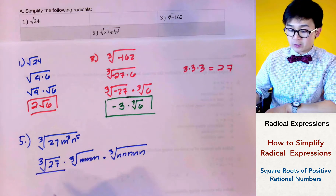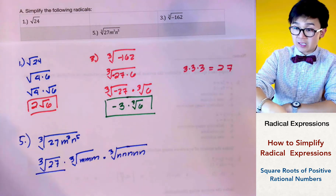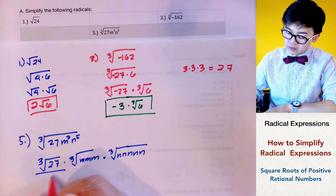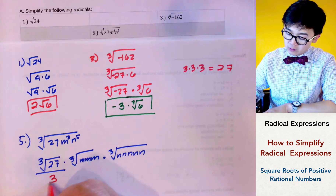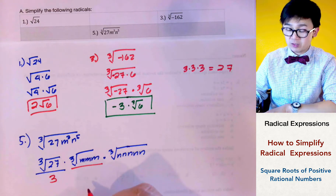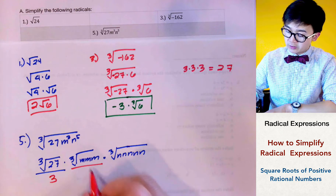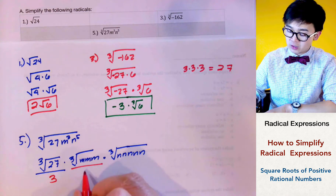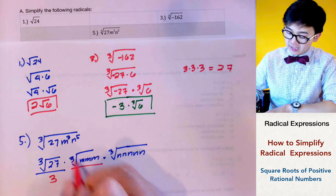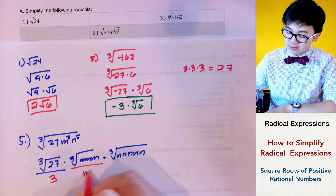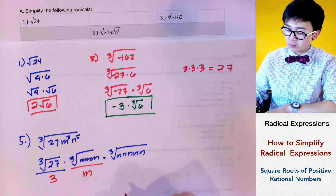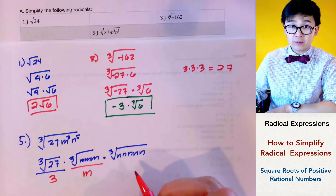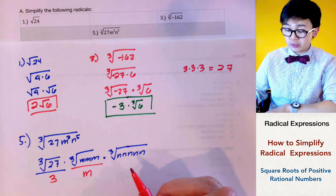We simplify the cube root of 27, which is a perfect cube, giving us 3. The cube root of m cubed is also a perfect cube, so we can take out m, cancelling out the cube root to get m in our expression.